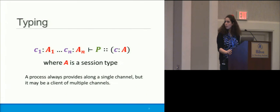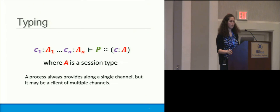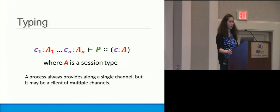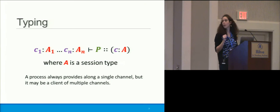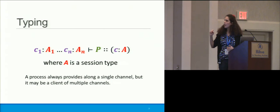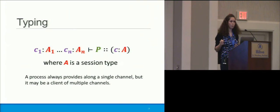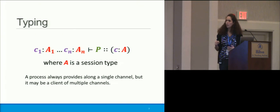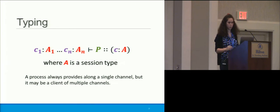This is our main typing judgment. We have a process P providing some service along channel C with type A, and this process can make use of other channels C1 through CN with types A1 through AN. Channel names are in purple, session types are in red, and the process is in green. Again, the process provides a single channel but may be a client of multiple channels.